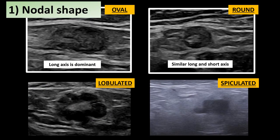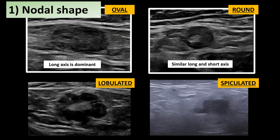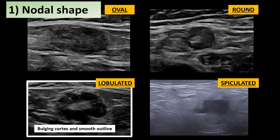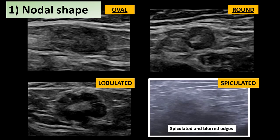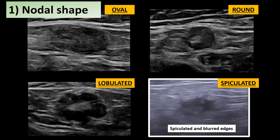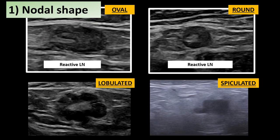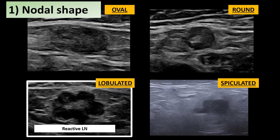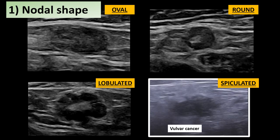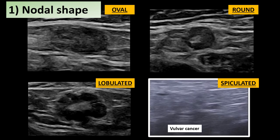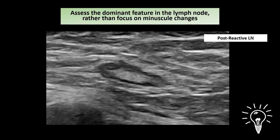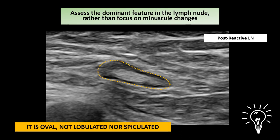In the first two videos, two regular lymph nodes are seen — one oval and one round. In the lobulated lymph node, the cortex has several bulges with smooth outlines. The last one is an irregular spiculated node with blurred edges. The two regular lymph nodes represent completely benign reactive processes. The lobulated lymph node is the result of reactive and post-reactive changes. The spiculated shape is typical of metastatic involvement, as seen in this completely infiltrated lymph node from vulvar cancer. When defining shape, consider the global appearance rather than irrelevant focal changes.